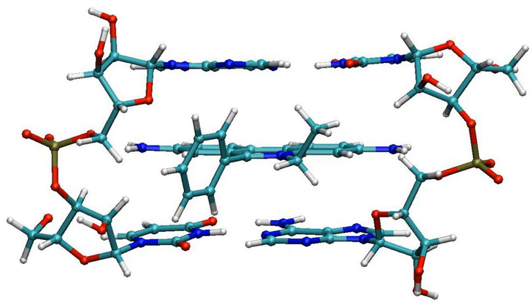Metallointercalators are complexes of a metal cation with polycyclic aromatic ligands. The most commonly used metal ion is ruthenium(II), because its complexes are very slow to decompose in the biological environment.